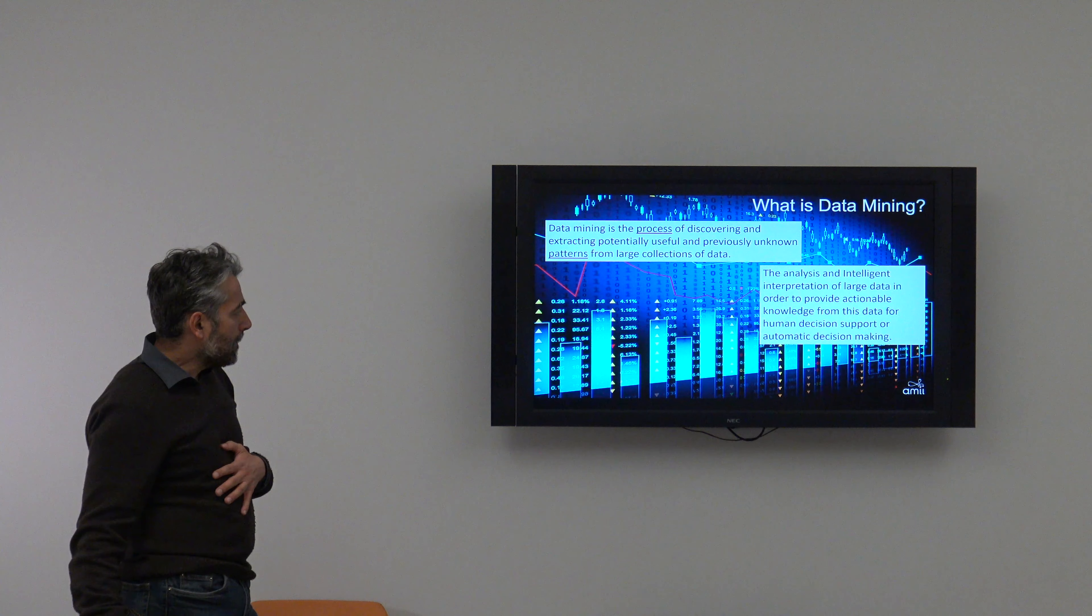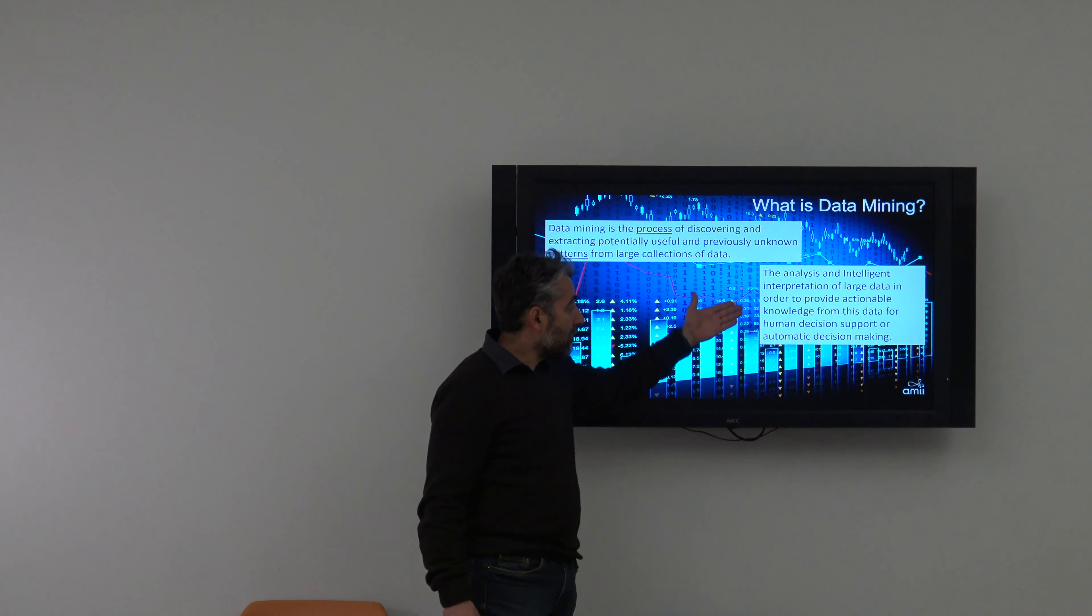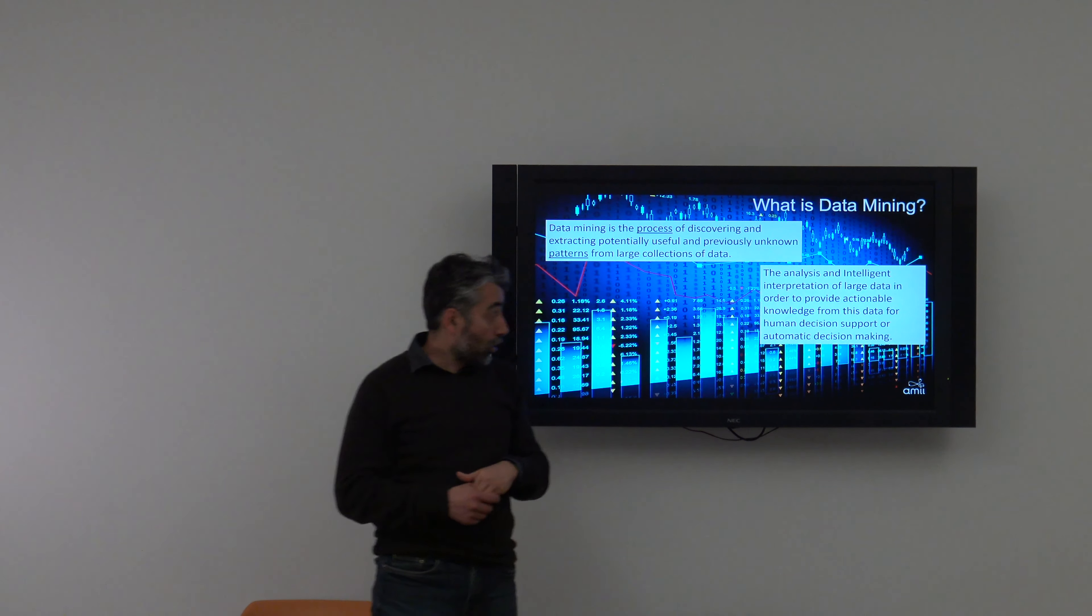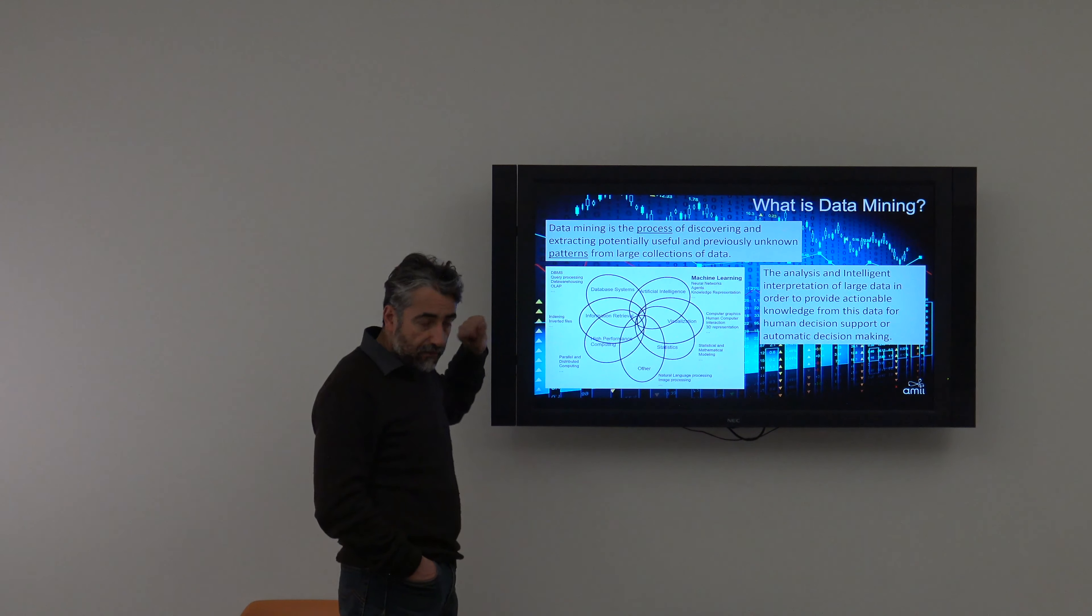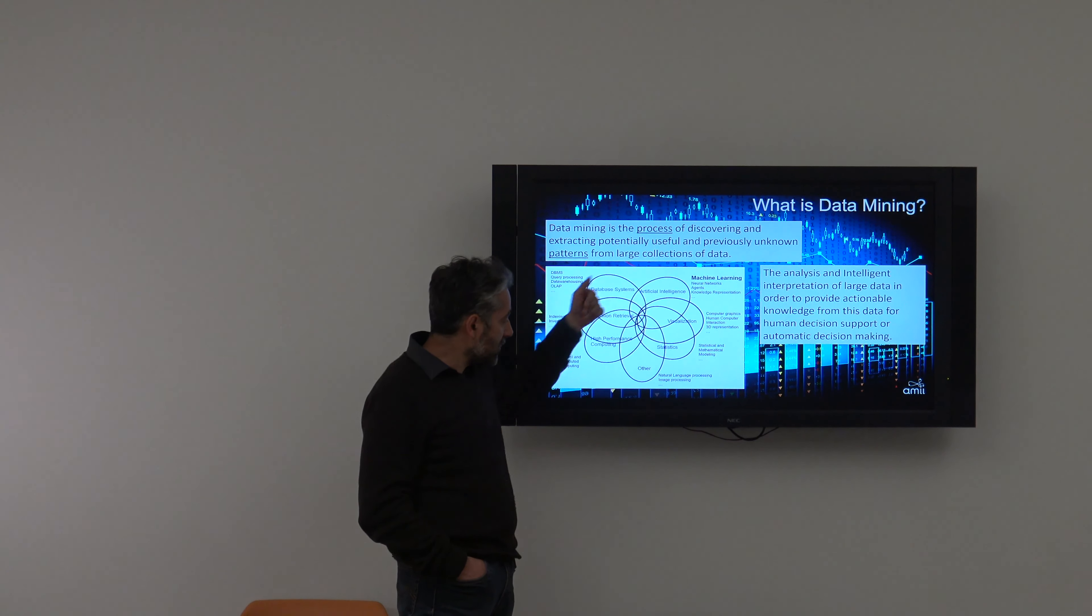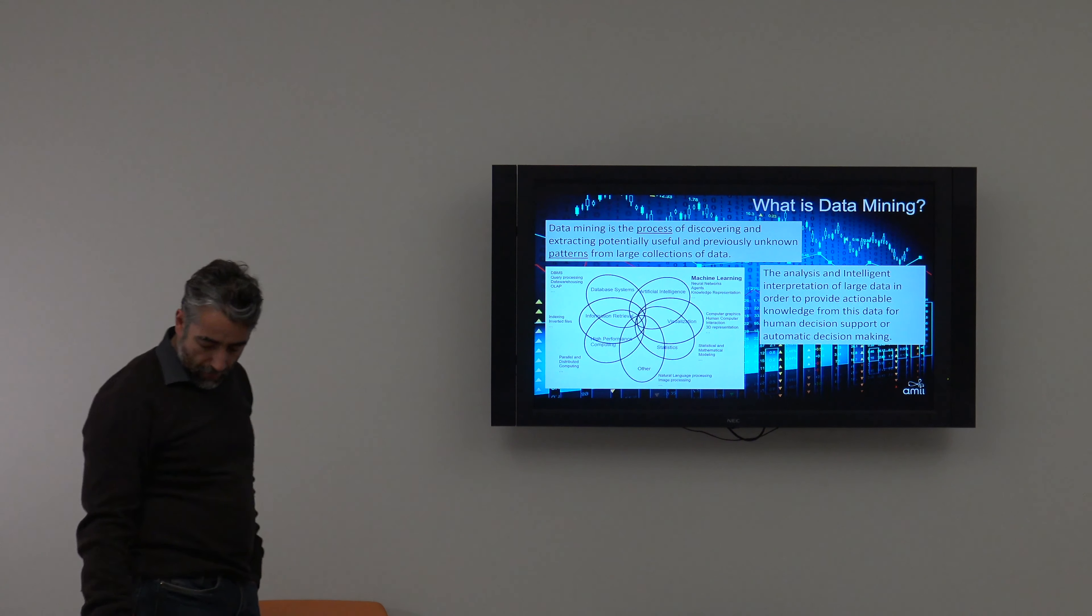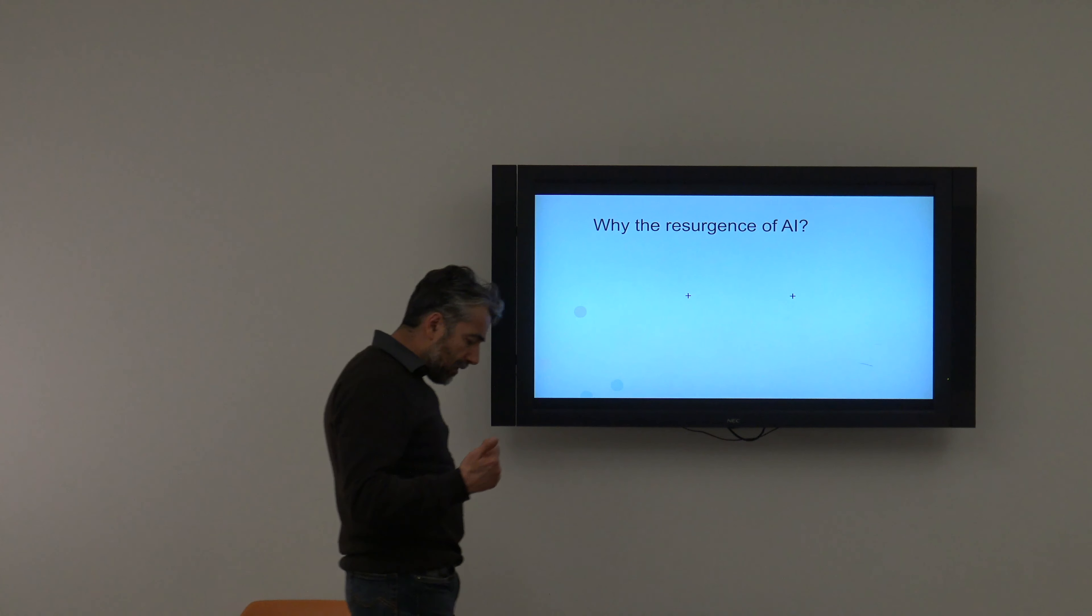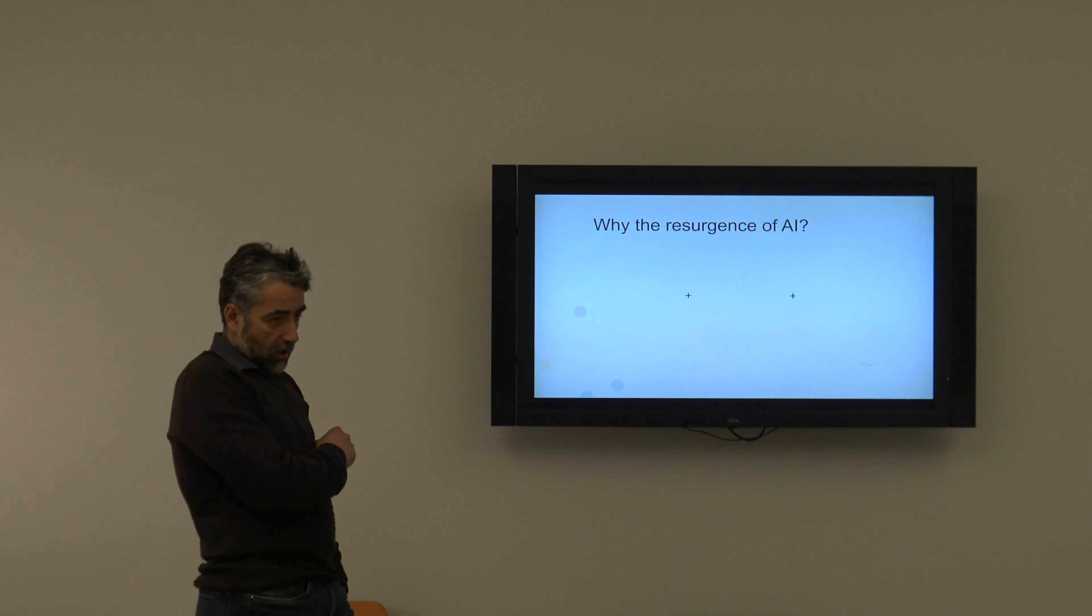There's another term that has been used for a while before AI came back to the surface. It's called data mining. Do you know what data mining is? Have you heard of data mining? Yes, everybody? So I want to define what data mining is. Data mining is a process of discovering and extracting patterns, potentially useful, and unknown to me, okay, from large collections of data. And actually machine learning is part of data mining. So what machine learning will do, remember I said it's supervised. So I'll give it data. It will look through that data. It will look for patterns and it will use these patterns to build that predictive model. Yeah, so it's the analysis and interpretation of the intelligent interpretation of large data in order to provide actionable knowledge from this data for human decision support or sometimes automatic algorithms as well.